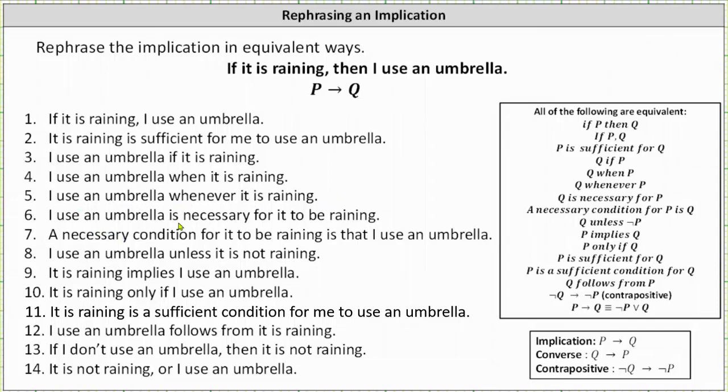Number six, I use an umbrella is necessary for it to be raining. Number seven, a necessary condition for it to be raining is that I use an umbrella.